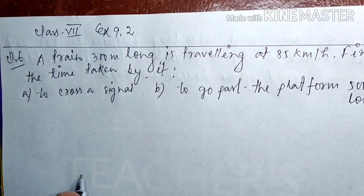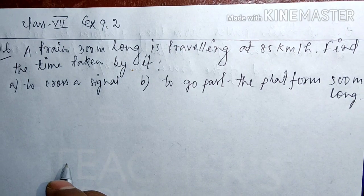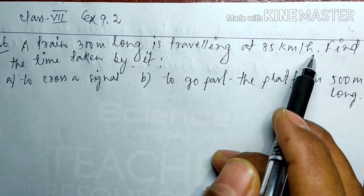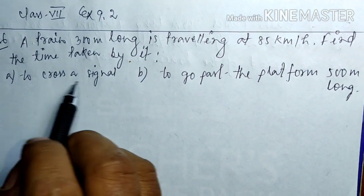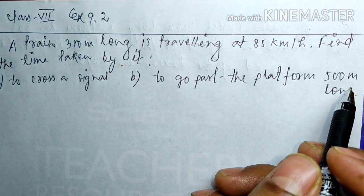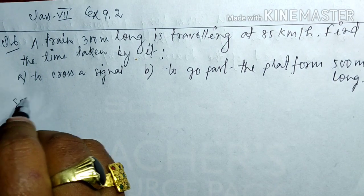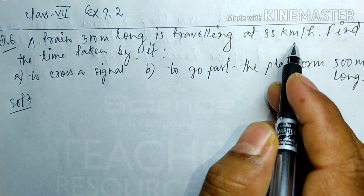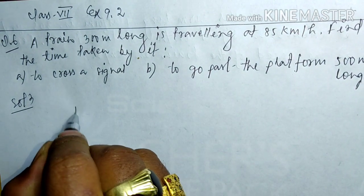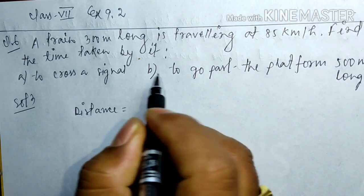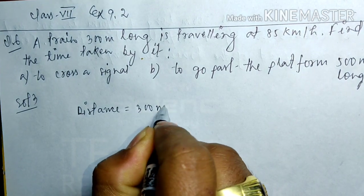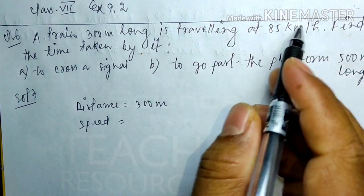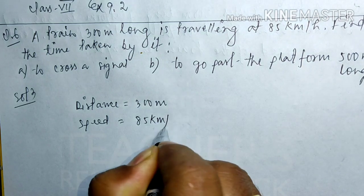Hello children, today we are going to solve exercise 9.2 question number six. A train 300 meters long is traveling at 85 kilometers per hour. Find the time taken by it to cross a signal, and to go past a platform 500 meters long. For the solution, we write down what is given: distance is 300 meters, speed is 85 kilometers per hour.